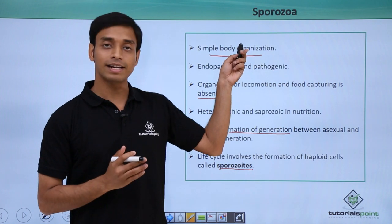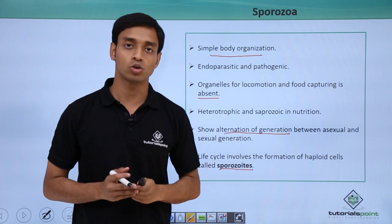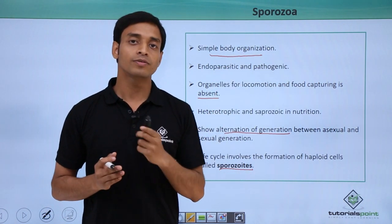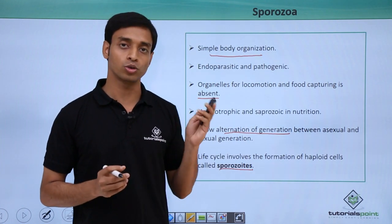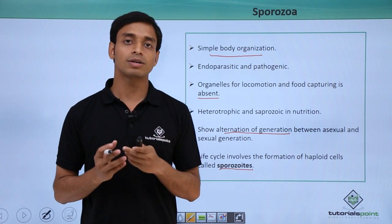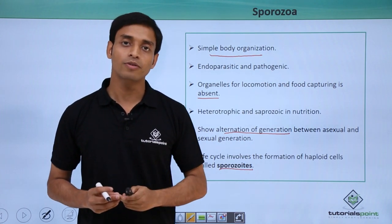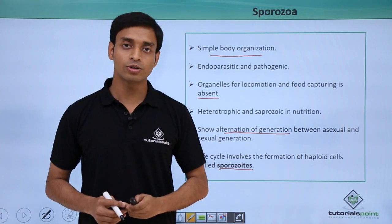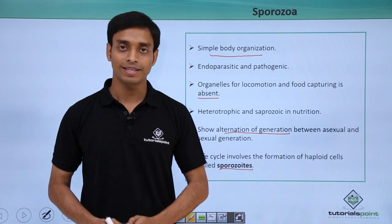The life cycle of Sporozoa involves the formation of haploid cells which are termed sporozoites, which is why this group is known as Sporozoa. In this video we have talked about the fourth group of protozoans, Sporozoa, and some of their important characteristics. I hope you have understood. Thank you.